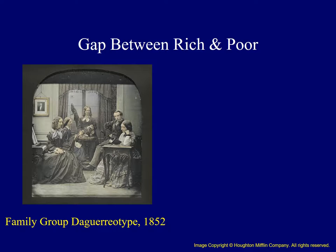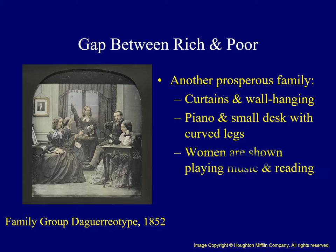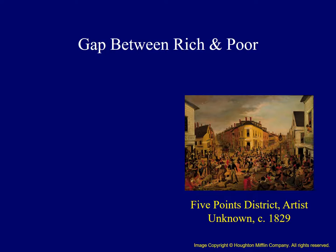Notice the curtains and wall hanging in this wealthy family's portrait. The family can afford a piano with scrolled legs and a small desk with elegantly curved legs. The ladies are posed in non-productive but improving activities such as music and reading. By contrast, this image shows New York's famous Five Points District, which gained a reputation as one of the nation's worst slums, known for crowded and unhealthy conditions and a great deal of crime. Newly arrived immigrants like the Irish congregated in places like this because they had no other options available.